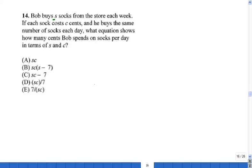Bob buys S socks from the store each week. If he pays for each sock C cents, he buys the same number of socks each day. What equation shows how many cents Bob spends on socks per day in terms of S and C?